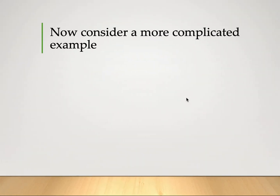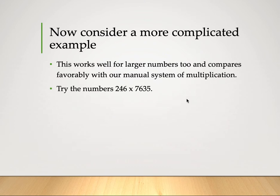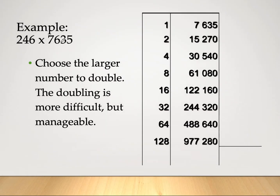Let's consider a more complicated example. This method works well for larger numbers too, and compares favorably with our manual system of multiplication. Let's try 246 times 7,635. We place 1 in the left column and the larger number, 7,635, in the right column.